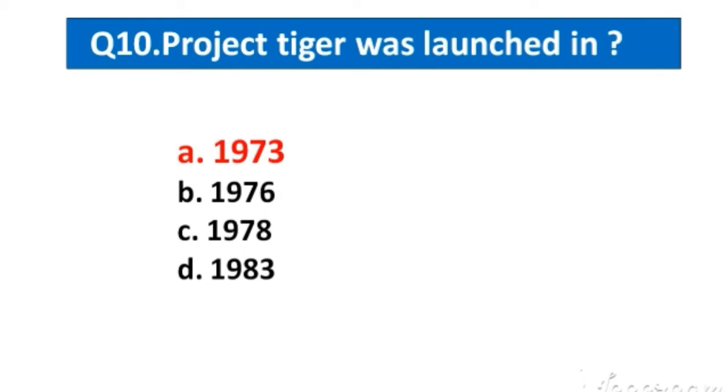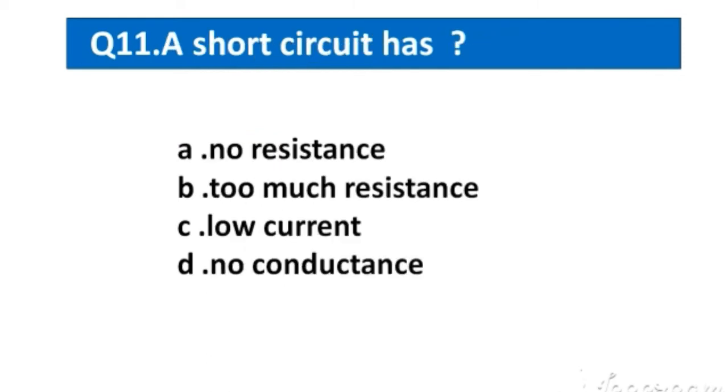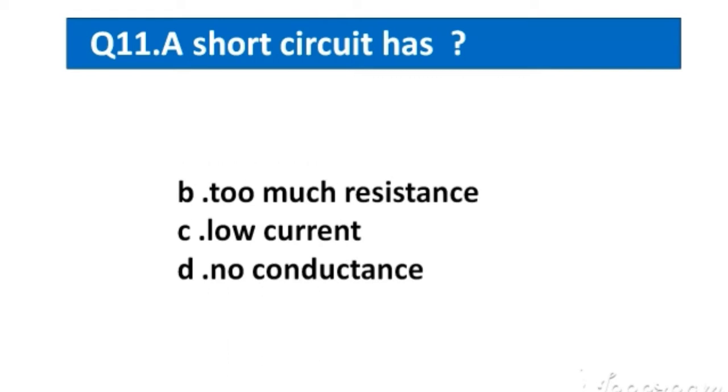Question number 11. A short circuit has. Option A. No resistance. B. Too much resistance. C. Low current. D. No conductance. The right answer option A. No resistance.